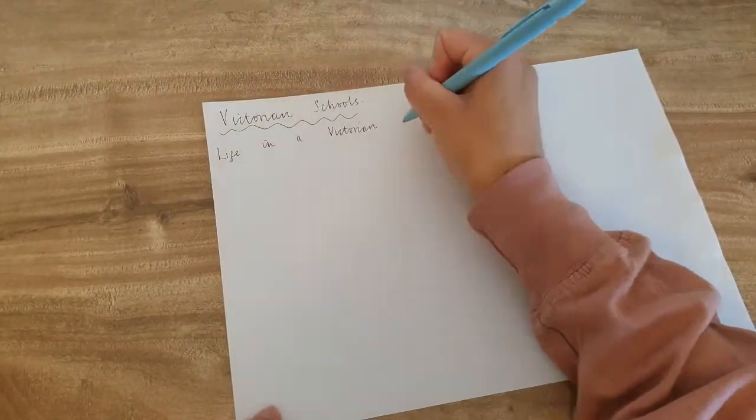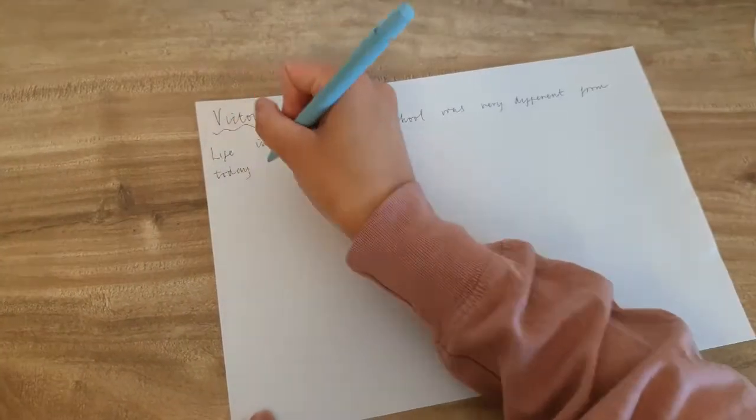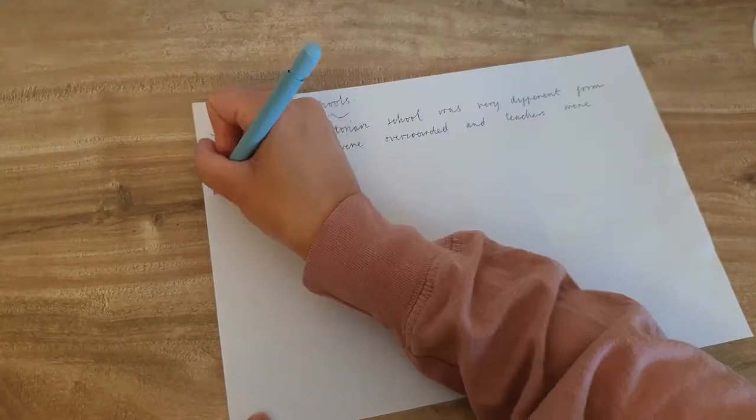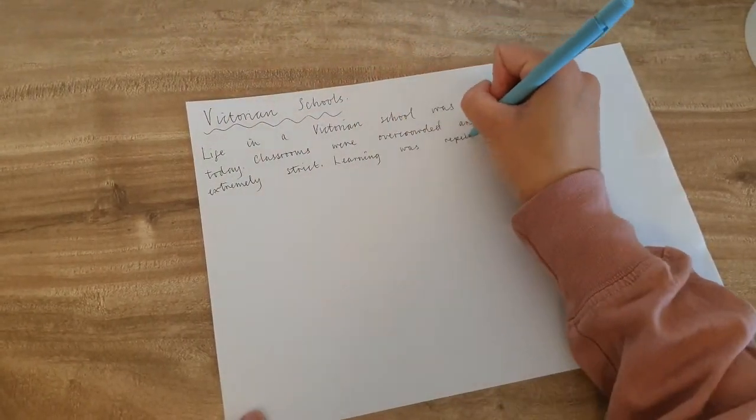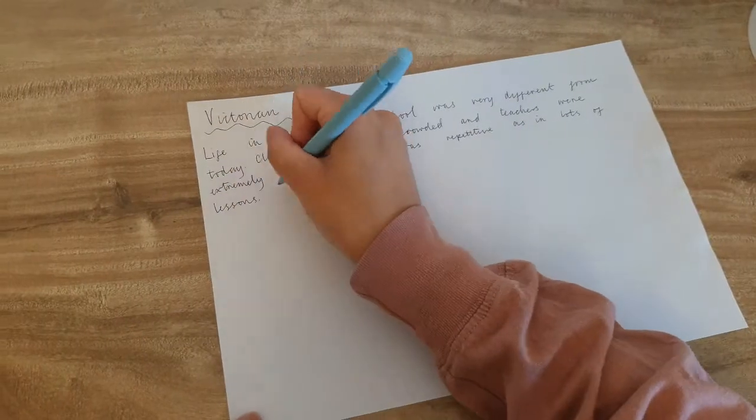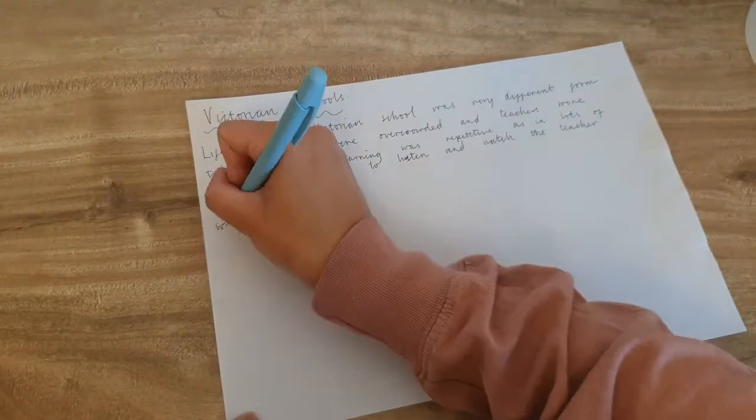These word maps contain adjectives describing many aspects of Victorian life and are fantastic for not only aiding children's writing, but also expanding vocabulary, improving writing, and adding flair to creative pieces.